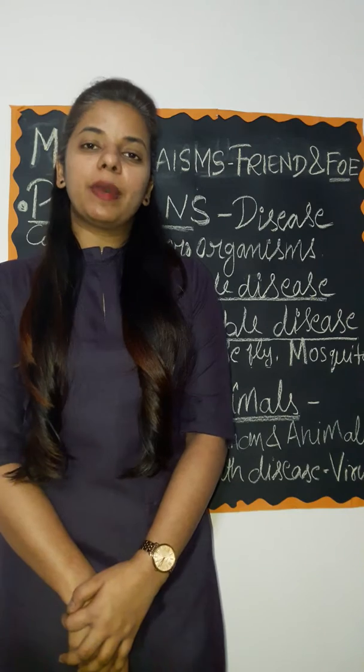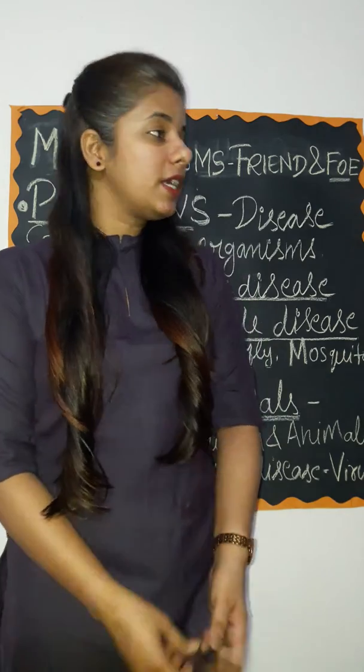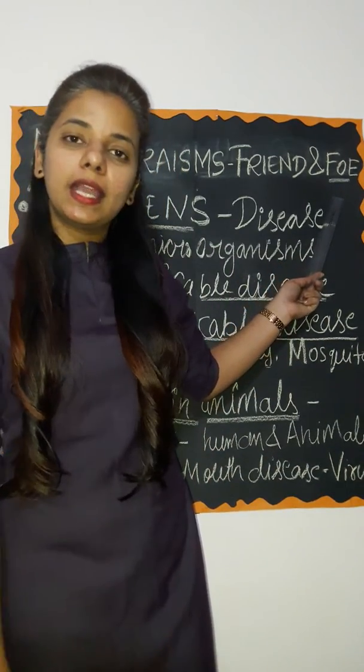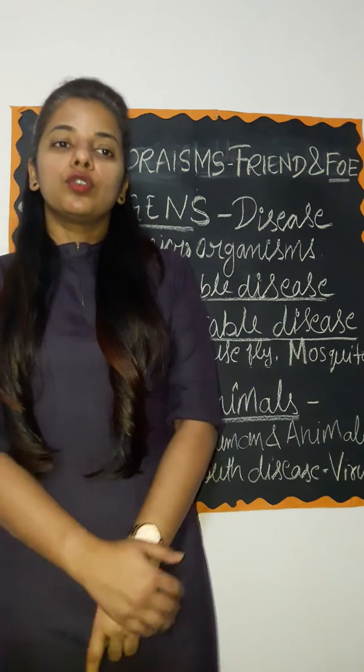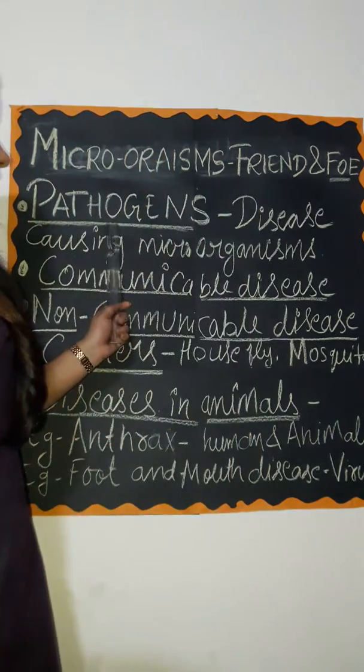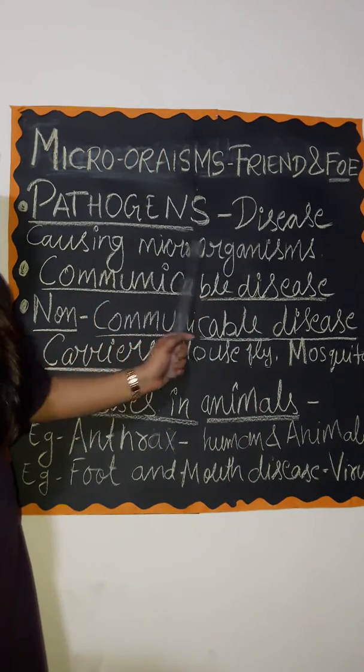Till now we have seen that microorganisms are very useful for us and we have seen their different advantages. Now we will see that microorganisms are equally harmful for us — they are our foe, meaning they are our enemies. The germs or microorganisms which enter our body and cause disease are called pathogens. Pathogens are disease-causing microorganisms.